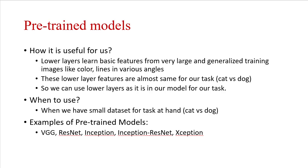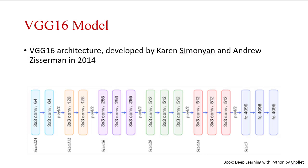Examples of pre-trained models are VGG, ResNet, Inception, Inception-ResNet, and Xception. We are going to talk about VGG model. VGG16 model was introduced by Karen Simonyan and Andrew Zisserman in 2014.